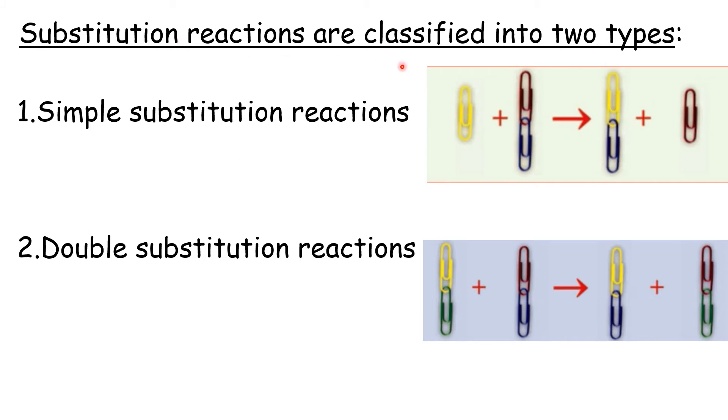Substitution reactions are classified into two types. Number one, simple substitution reactions - one element replaces another element, producing a new compound and an element. Number two, double substitution reaction - doubling where yellow substitutes the red and green substitutes the blue, producing compounds. Simple substitution reaction: element plus compound. Double substitution reaction: compound plus compound.